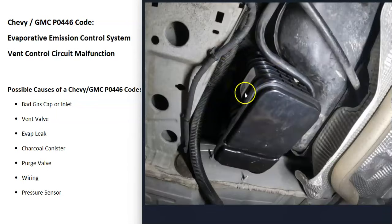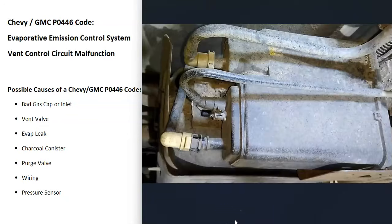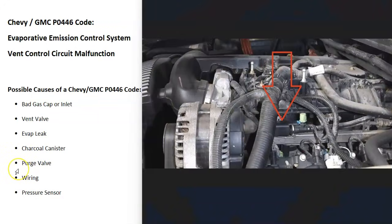Something going on with the charcoal canister — it's clogged, leaking, or has some other issue — can also cause this code, so the next thing to examine is that charcoal canister. Up on top of the engine is the purge valve. Usually if the purge valve goes bad you'll get a different code, but it is something to keep in mind and it can be tested just like the vent valve — it's just a solenoid that opens and closes. There's a video linked below on how to test these.